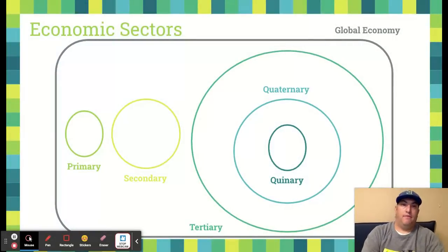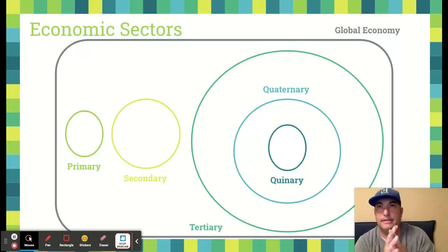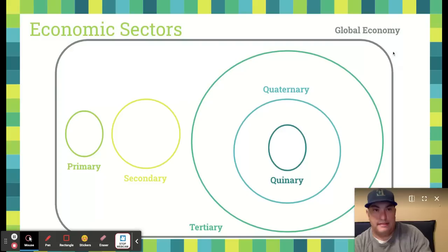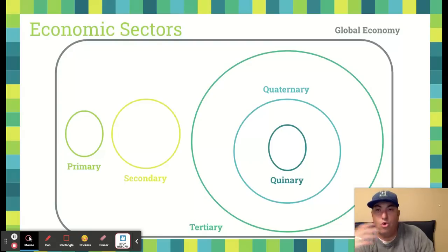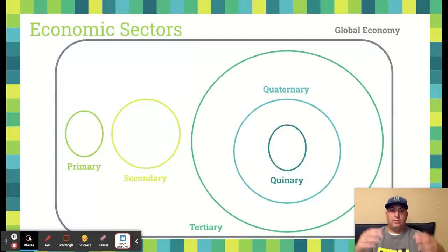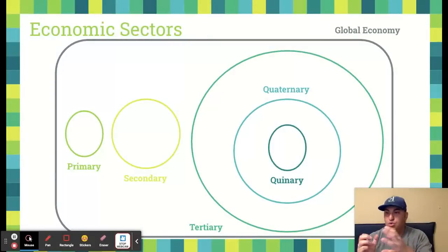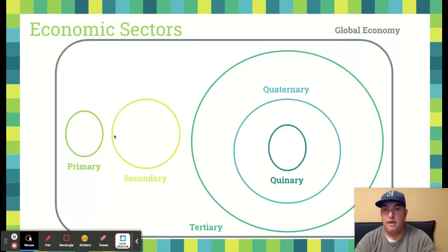Let's talk about economic sectors — this is some new stuff. The global economy — the way you should look at this graphic organizer I made is kind of like a Venn diagram. Everything is within the global economy, that gray rectangle. We start off with the primary sector. Primary sector work has to do with extracting and collecting raw materials — think farming, coal mining, those are primary jobs. Now, once we take these raw materials and start processing them, turning them into something else, that is the secondary sector. There's no real overlap between the primary and the secondary sector.